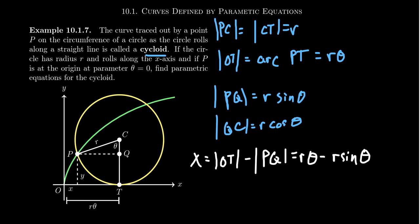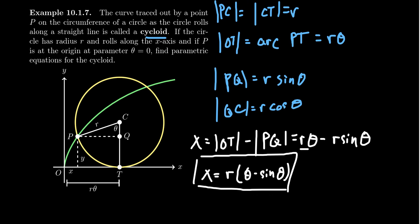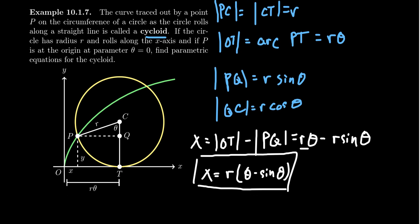I noticed that there's a common factor of R. So if we factor that out, we're going to get X equals R times theta minus sine theta. We can describe parametrically X with respect to theta here.